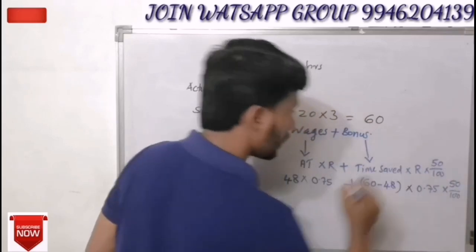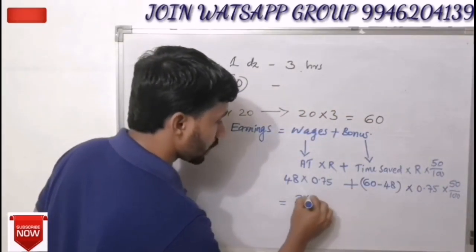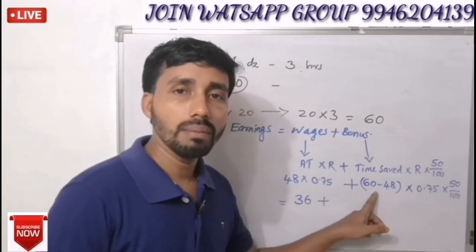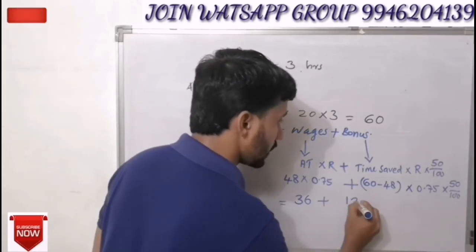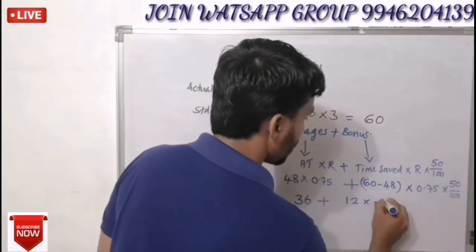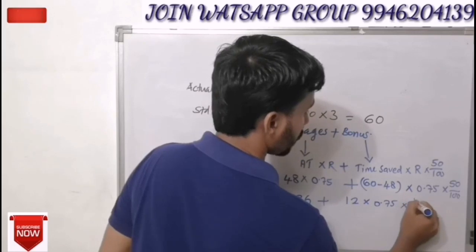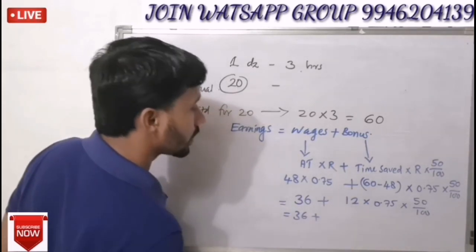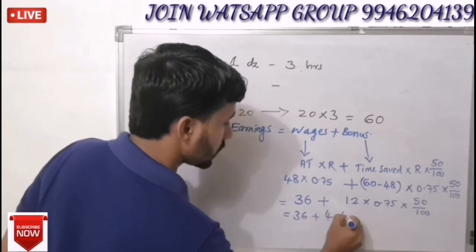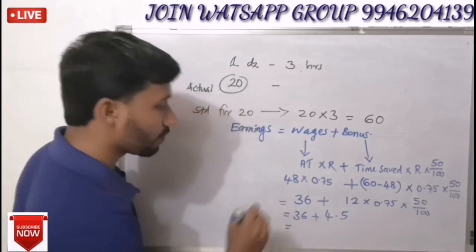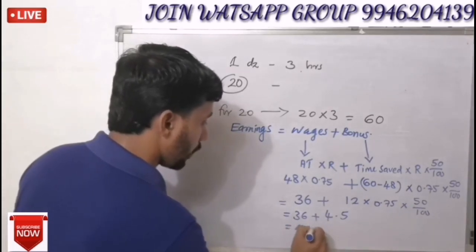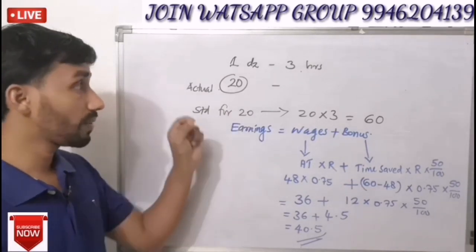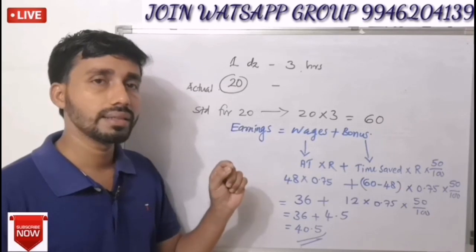Working out: 48 into 0.75 gives 36, plus 48 minus 60 — that is 12 hours time saved — into 0.75 into 50 divided by 100 gives 4.5. Total earnings equals 36 plus 4.5, which is 40.5. This is the answer.